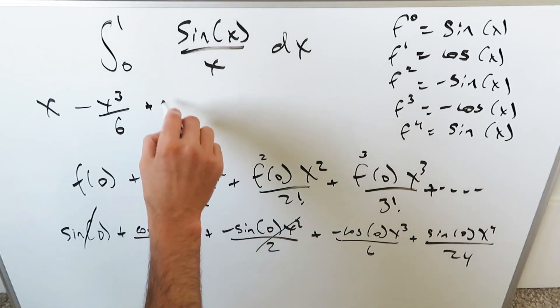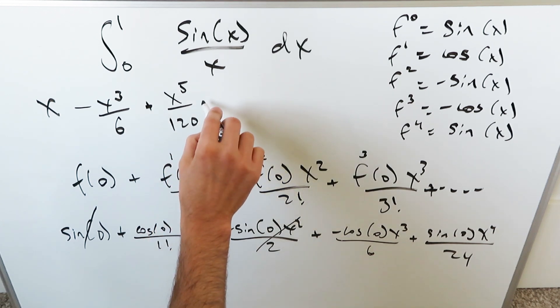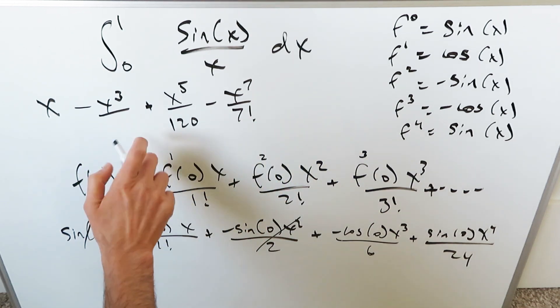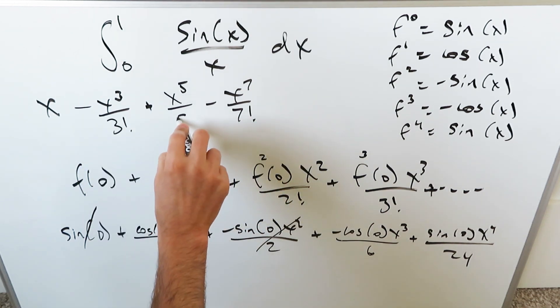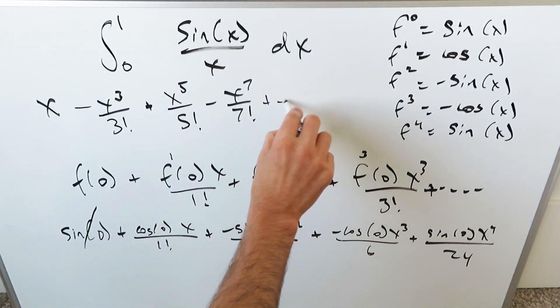If you continue this on, you'd have x to the 5 over 5 factorial, which would be 120, then a minus x to the 7 over 7 factorial. For consistency, let's bring in these factorials. This is my sine series developing as you can see it.